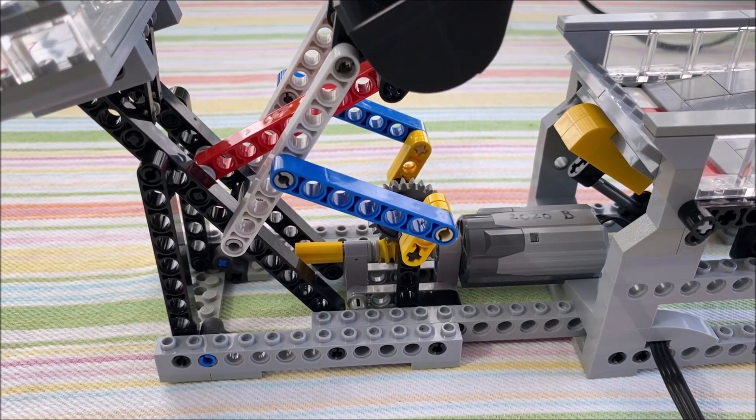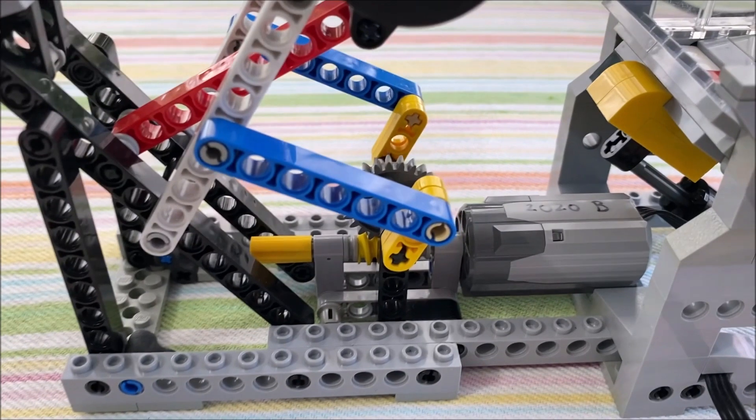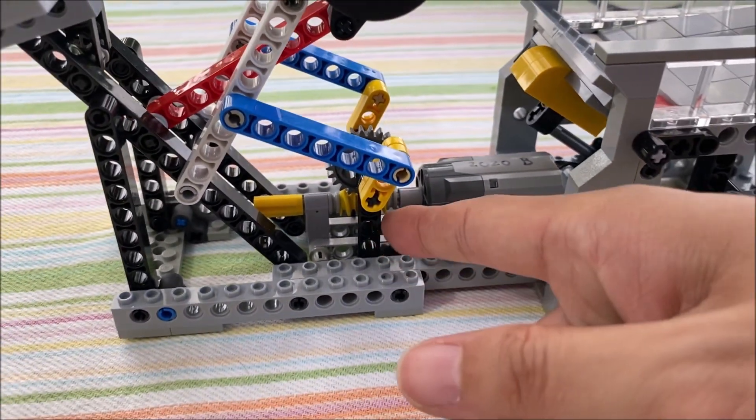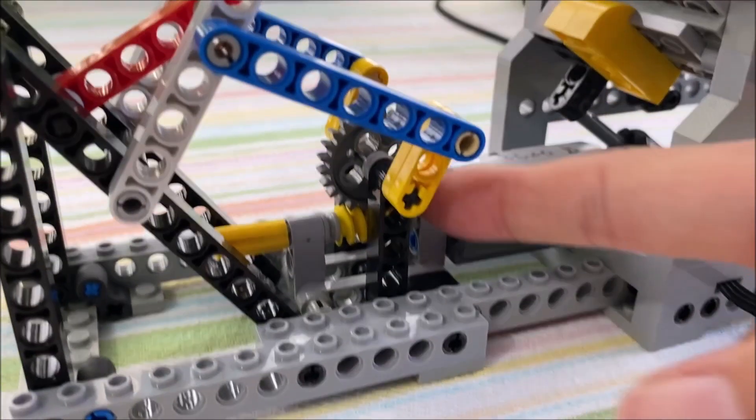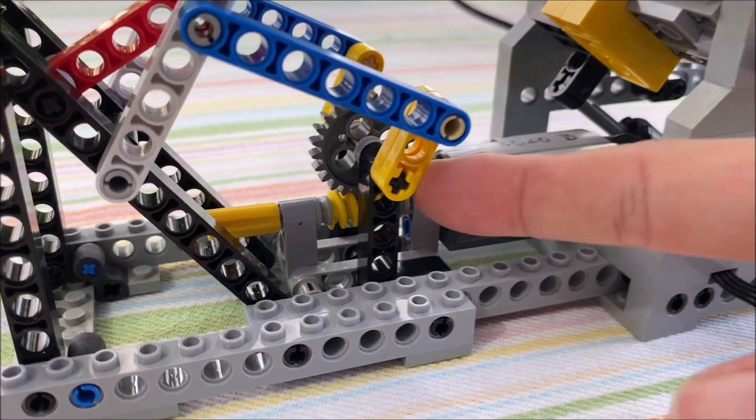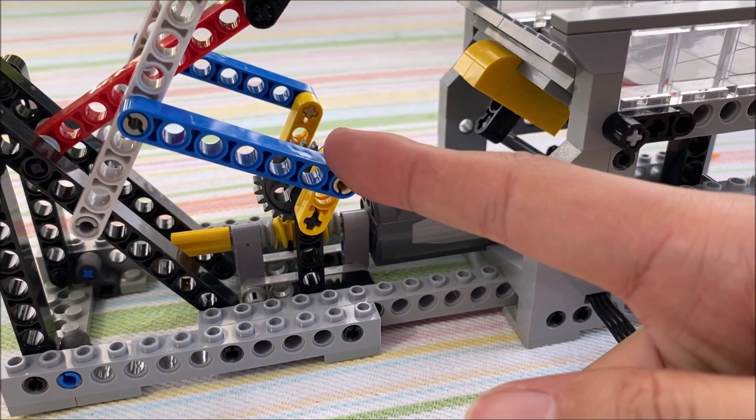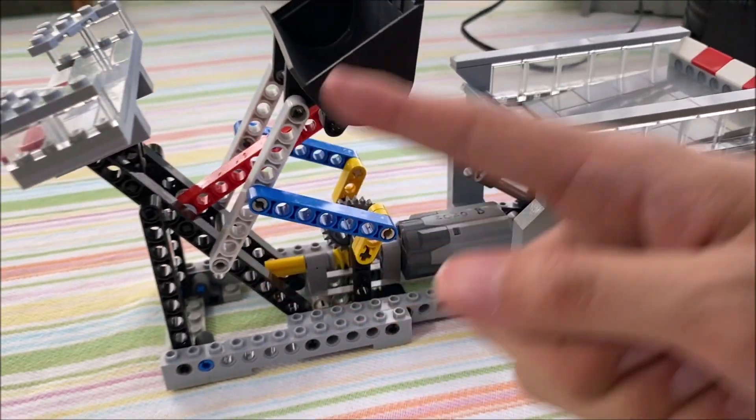So like many other GBC modules involving a linkage, this is driven off a crank. So there's a worm and a 24, so it's 1 to 24 off the motor. That turns this crank, this yellow crank here, which pushes this linkage to move the main linkage of the bucket.